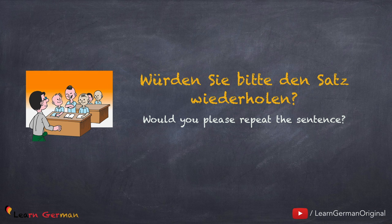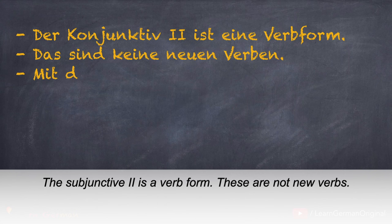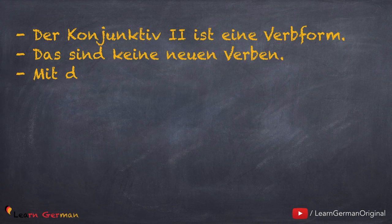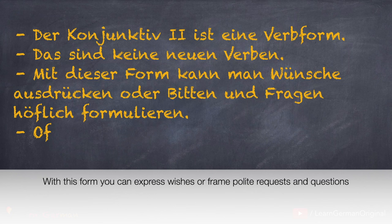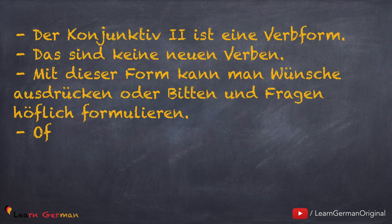In diesen Beispielen benutzen wir die Konjunktiv 2-Form Könnten und Würden. Der Konjunktiv 2 ist eine Verbform – das sind keine neuen Verben – genauso wie die Präteritum-Form oder die Perfekt-Form. Mit dieser Form kann man Wünsche ausdrücken oder bitten und Fragen höflich formulieren. Das lernen wir in dieser Lektion.